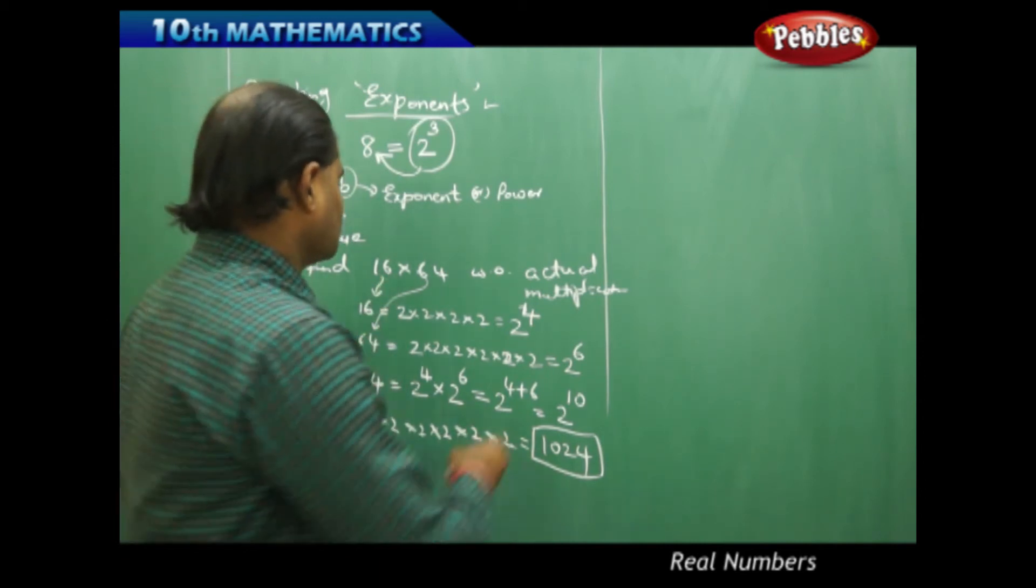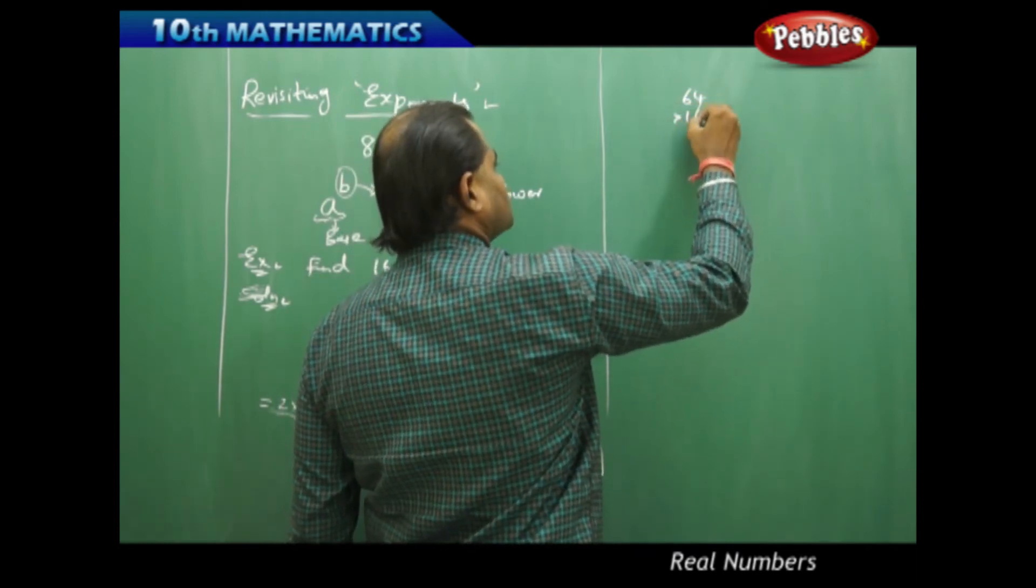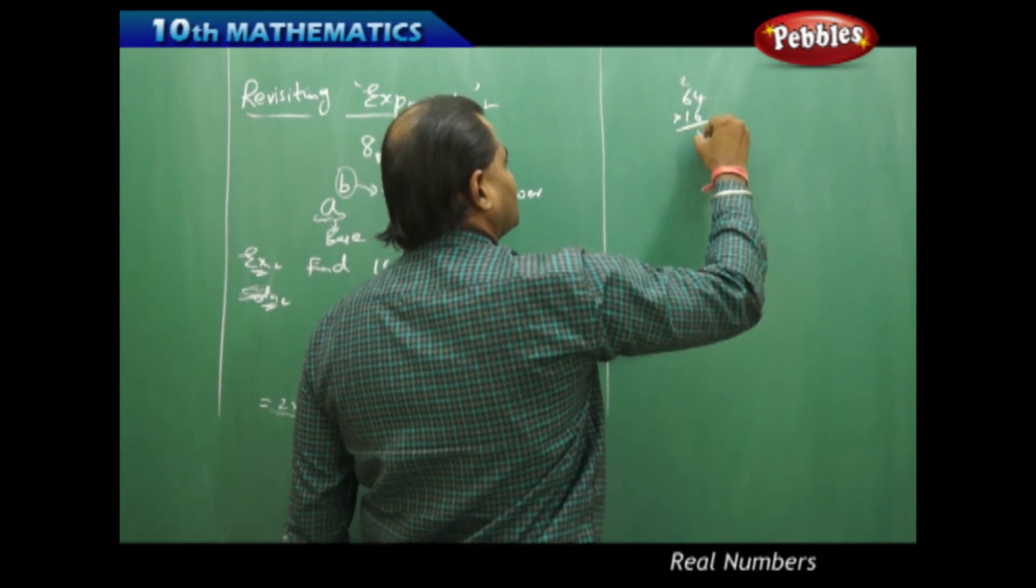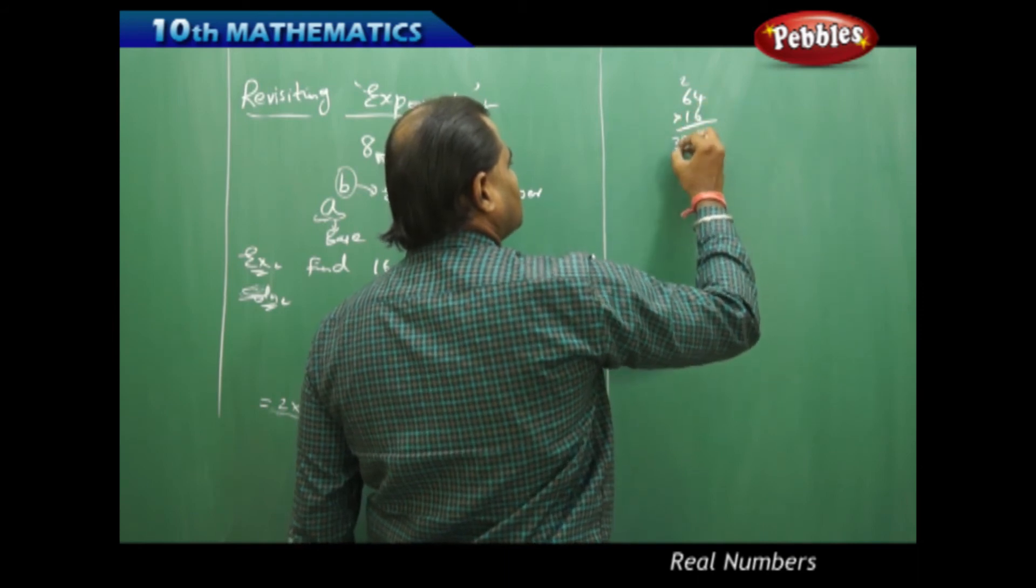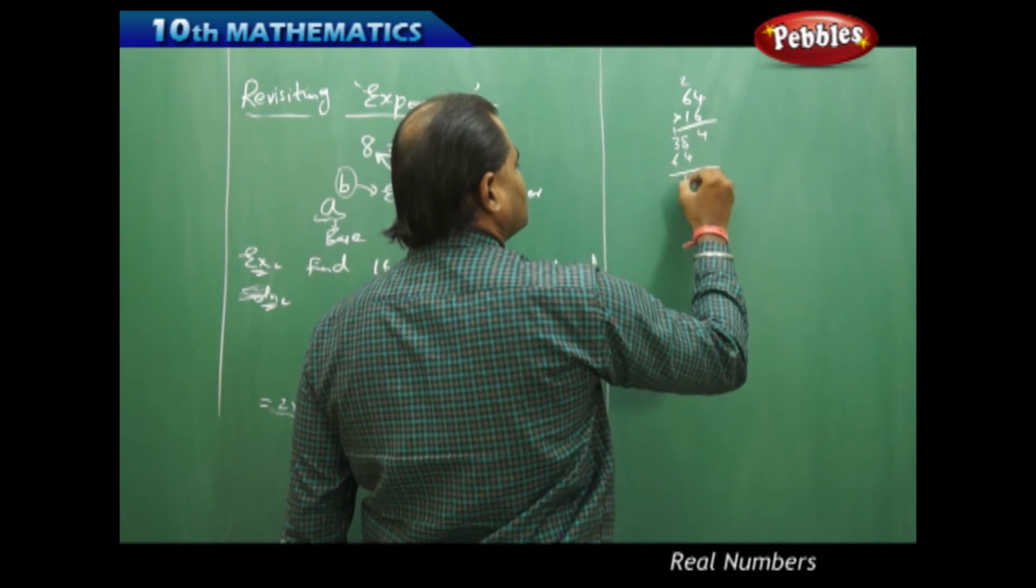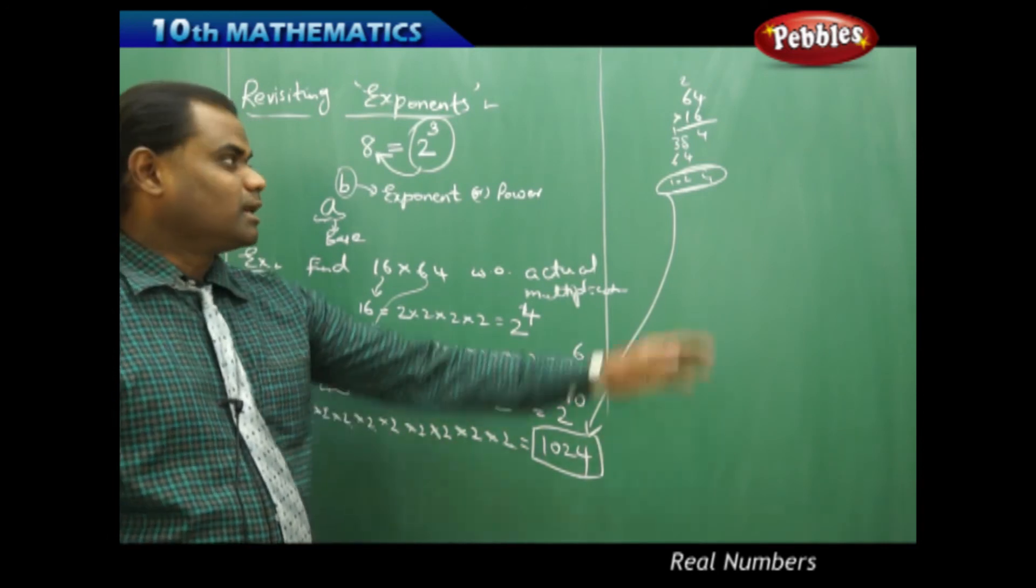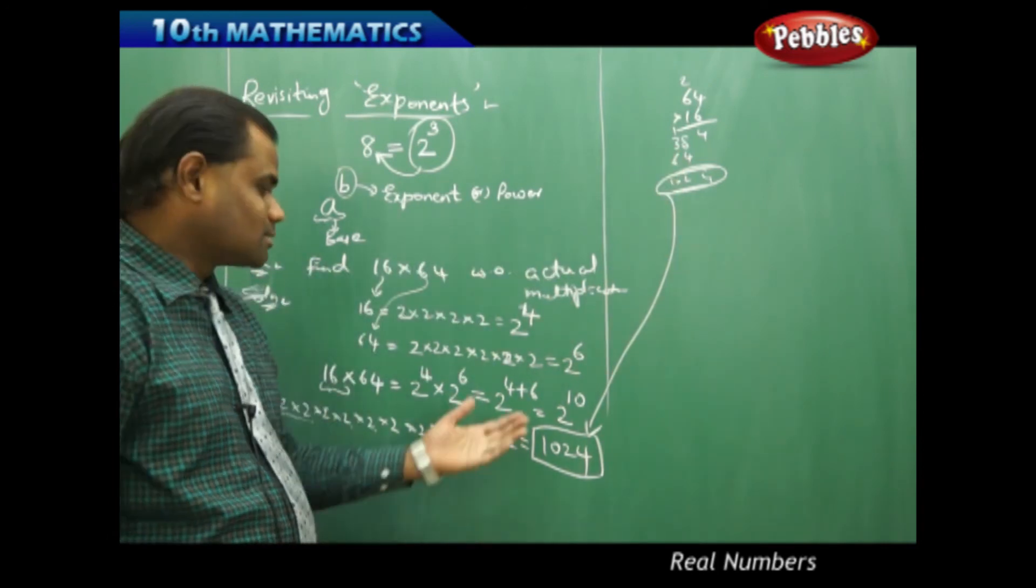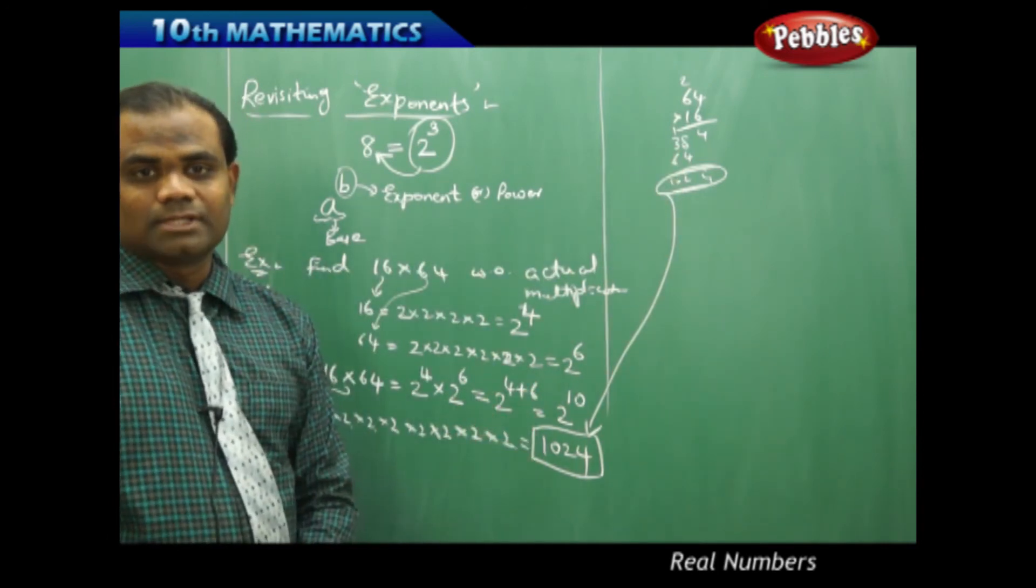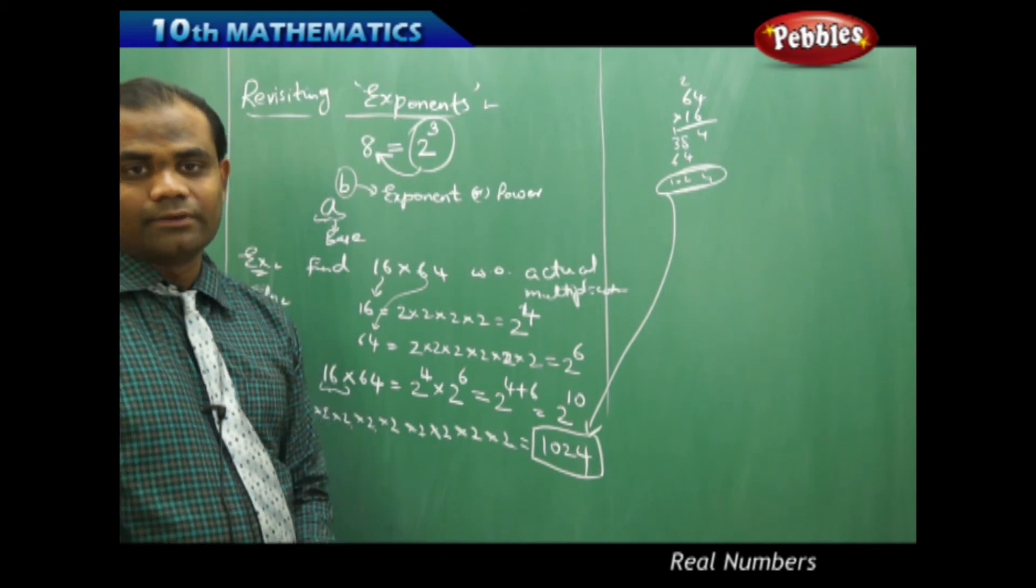If my actual multiplication, let's see if I get the exact answer for verification through 64 times 16. 6 times 6 is 36, 4 once 4 and 6 is 4, 12, and this is exactly the same answer, 1024. This is by actual multiplication and this is by exponential form. This is how we understand the significance of exponents in real life.